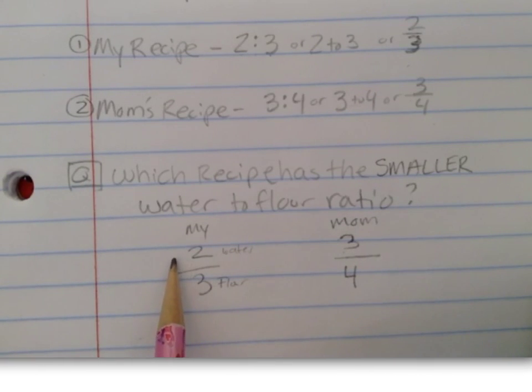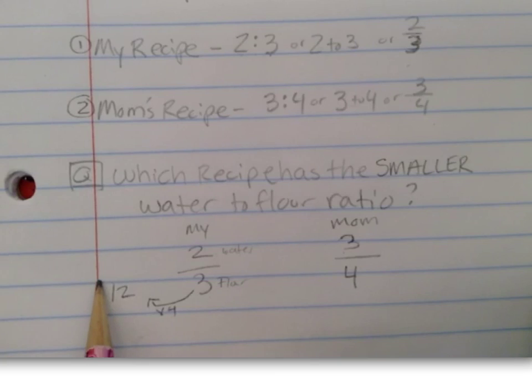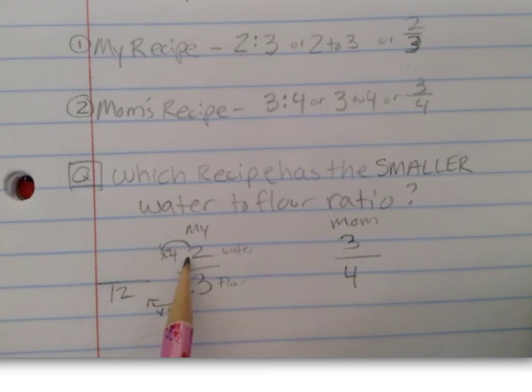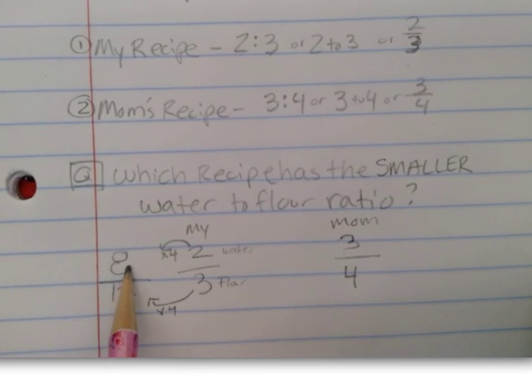So I know that if I quadruple my recipe, I get 12 cups of flour. And if I also quadruple my cups of water by multiplying it by four, I know that I have two times four, which is eight cups of water for every 12 cups of flour. That's for my recipe.